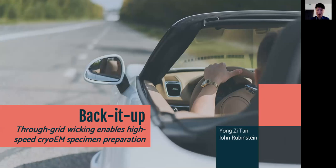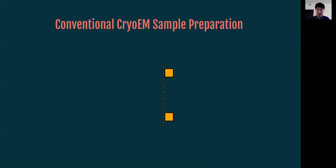Good afternoon, everyone. First of all, I'd like to thank Edward and Emiko for the very kind introduction, as well as the opportunity to present my work here at this conference. I'm really honored. So I'm Yongzhi Tan, and today I'm presenting this Back It Up vitrification device for cryo-EM that utilizes through-grid wicking technique to be able to produce cryo-EM grids of high consistency and thin ice and allows for high resolution cryo-EM. So this was done together with my PI, John Rubenstein, here at the Hospital for Sick Children in Toronto.